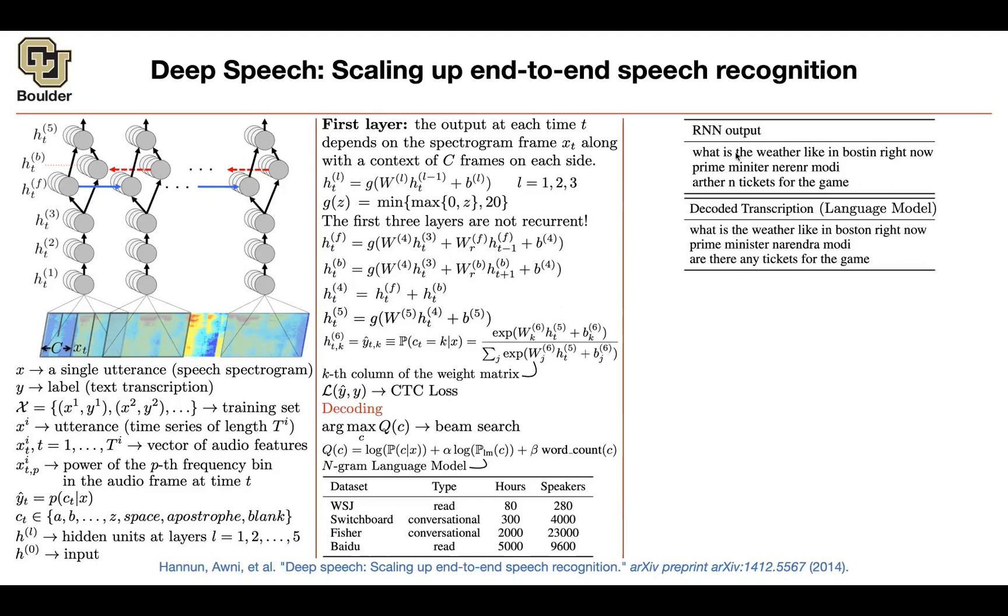Without the language model for the decoding, what are you going to get? You're going to say, what is the weather like in Boston right now? Prime, Minitur, Nerener, Modi, Arthur, and Ticket for the game. But then as you add the language model, the Boston here is going to get fixed to be Boston. Prime Minister, Narendra Modi, that one is going to get fixed because probably Narendra is a word in your vocabulary. And this is going to get fixed as well. Are there any tickets for the game? So that's the effect of your language model.